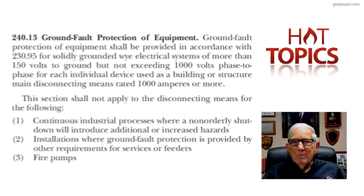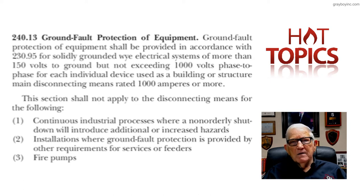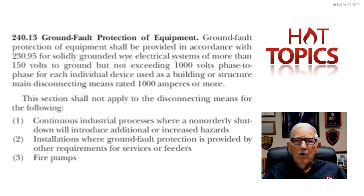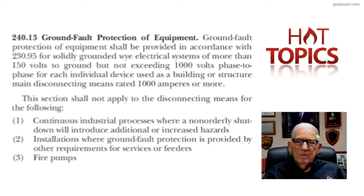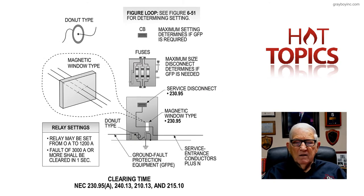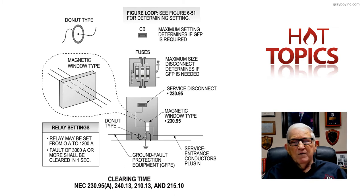Getting back to ground fault protection of equipment, 230.95C is the section that seems to be asked about a lot, pertaining to its requirements. If you notice, there is a relay setting, and we have an illustration in Stockup's Electrical Design Book, volume one — that's figure 9-44, approximately on page 9-27. It gives an excellent set of rules that must be followed when ground fault protection of equipment is required.